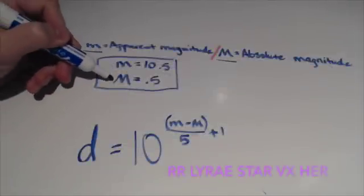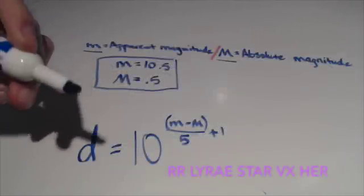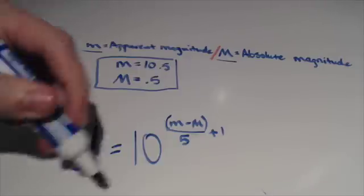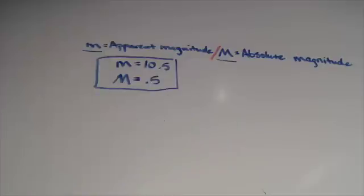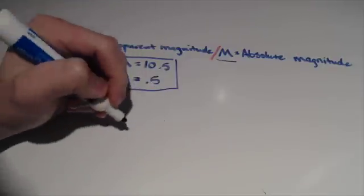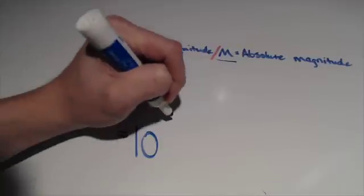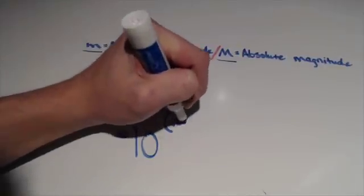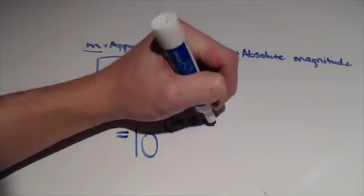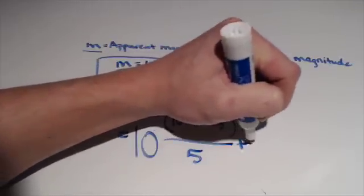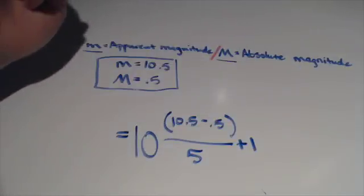Once both apparent magnitude and absolute magnitude are known, we can simply substitute into the distance modulus formula and rework it to give a value for d, the distance to the Cepheid. The apparent magnitude in this example is 10.5. The absolute magnitude is 0.5. Watch as I rework this equation to find out d, the distance to the Cepheid.